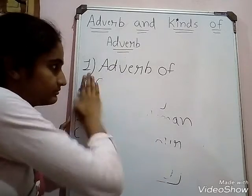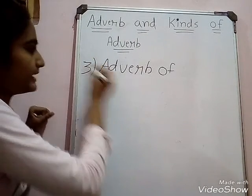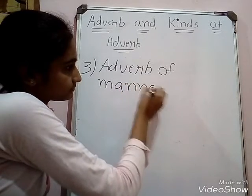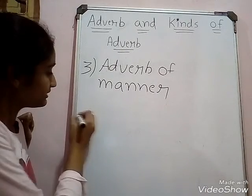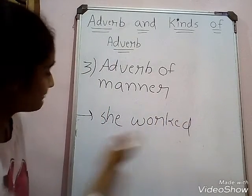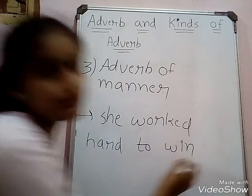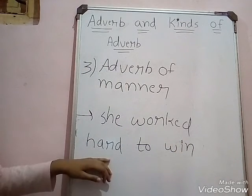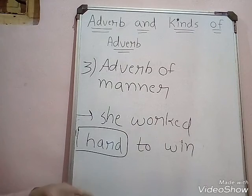The third kind is adverb of manner. What is meant by adverb of manner? It tells how or in what manner an action is done. For example, 'She worked hard to win.' She worked — but in what manner did she work? Hard. So 'hard' is our adverb of manner. Other examples include 'hard' and 'angrily.'